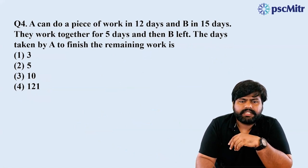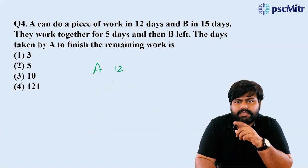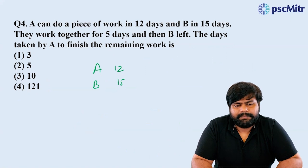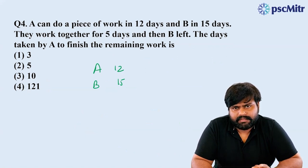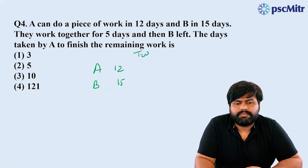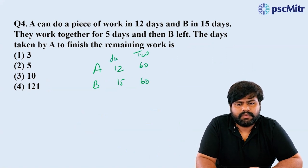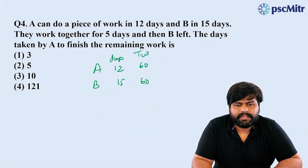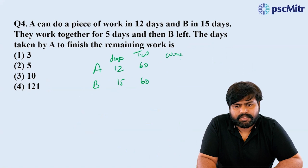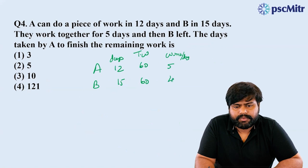A can do a piece of work in 12 days, and B in 15 days. We have to find the total work. I will go to total work from both sides. They work together for 5 days. A does 5 units of work per day, and B does 4 units of work per day.